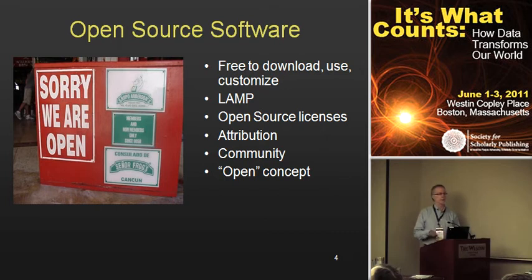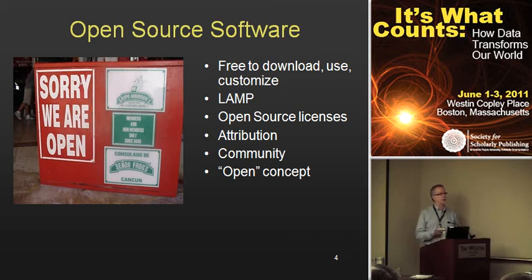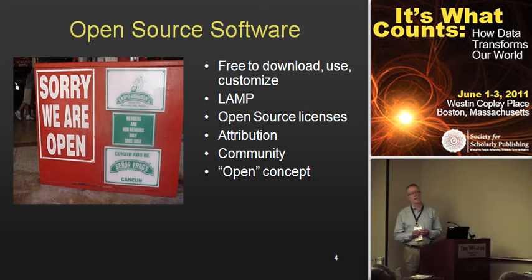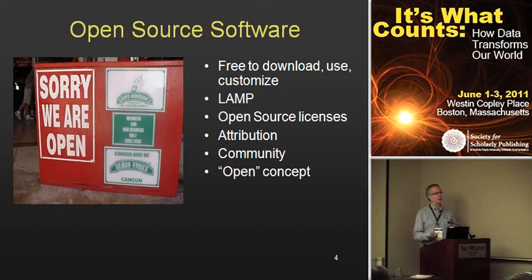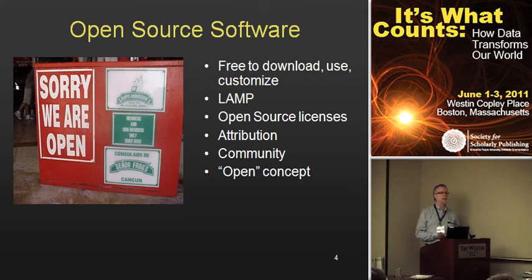OJS and the other PKP products are licensed as GPL open source products. Some people have described GPL as a viral open source license because there are a number of different licenses out there — some allow you to pull software in and commercialize it. That's not possible with GPL-licensed software; you really have to keep it as open source. Another key concept in open source is attribution. Even though the software is free and people are encouraged to use it, you can't rewrite or replace the original developers' names and claim it as your own.